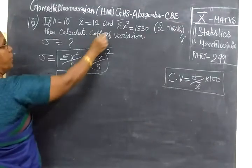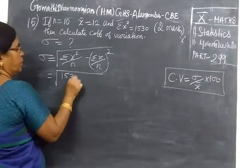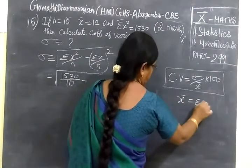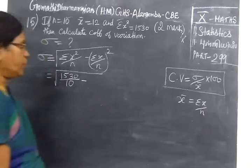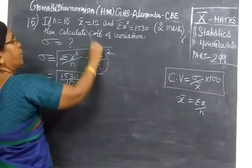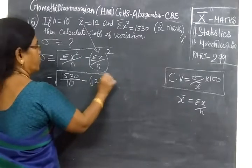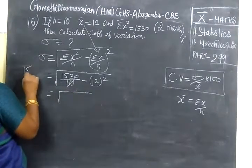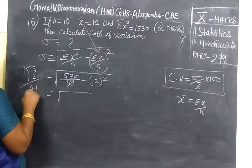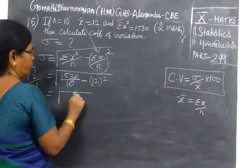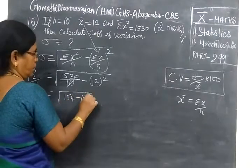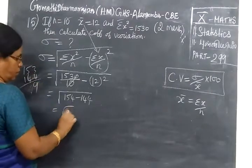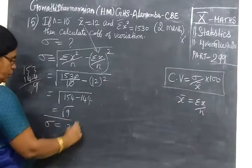Equal to root of Sigma X square by N. 1530 by N is 10, minus X bar. We know X bar is equal to Sigma X by N. So X bar value is 12 whole square. So equal to 153 minus 12 square, 144. So 153 minus 144, we get 9. So equal to root of 9, equal to 3. So this is Sigma.